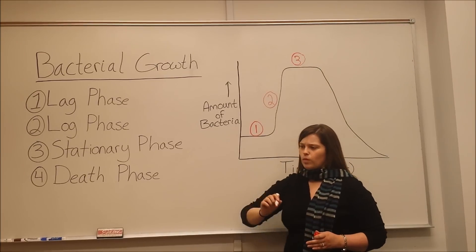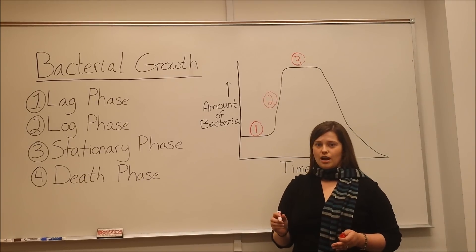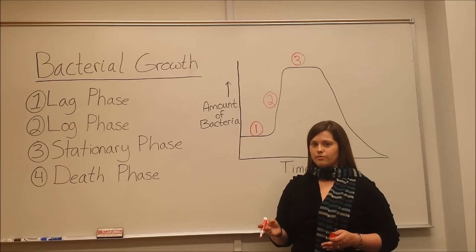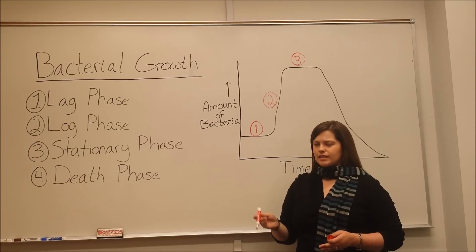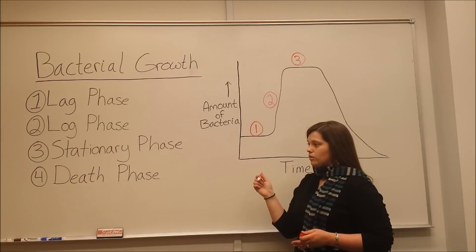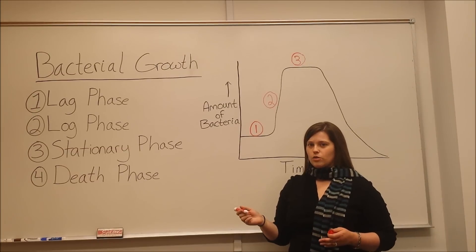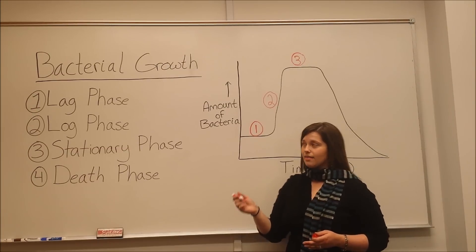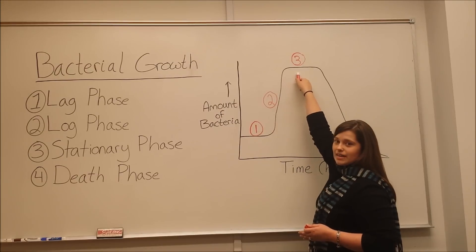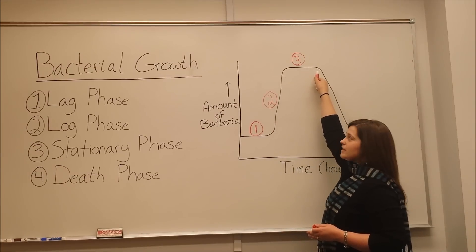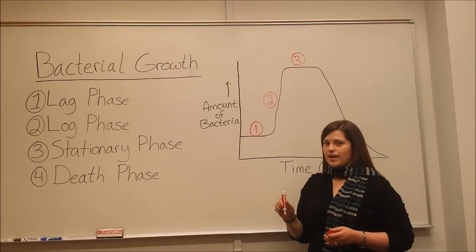Stationary phase is when enough of the nutrients are gone and enough of the waste products have built up, that basically the rate of cell growth is approximately equal to the rate of cell death. That's why we aren't seeing a net increase in the amount of bacteria once we get to stationary phase.